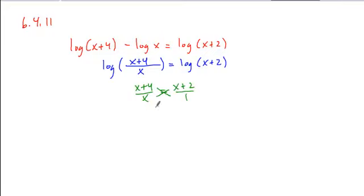It's a proportion, so we can cross multiply to solve. We get x times x plus 2 is equal to 1 times x plus 4. Expand. We distribute the x through, giving us x squared plus 2x is equal to x plus 4.